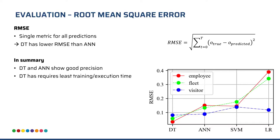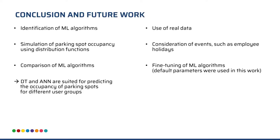Overall, we still say that decision trees and neural networks show very good precision. Decision trees are also quite simple and therefore perform faster than neural networks. The main contributions of this work are: identifying suitable models, simulating occupancy with distribution functions, and comparing the models. Both decision trees and neural networks are suited for predicting parking space occupancy. Future work should use real data, as the simulated data does not account for special events, employee holidays, or sickness. Additionally, the models used default parameters and could be fine-tuned.